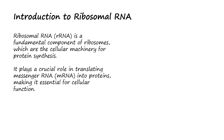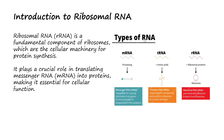It is important in translating the genetic codes in the messenger RNA into proteins. So we have different types of RNA. A messenger RNA is responsible for carrying information from the genes for production of polypeptides in the cytoplasm.